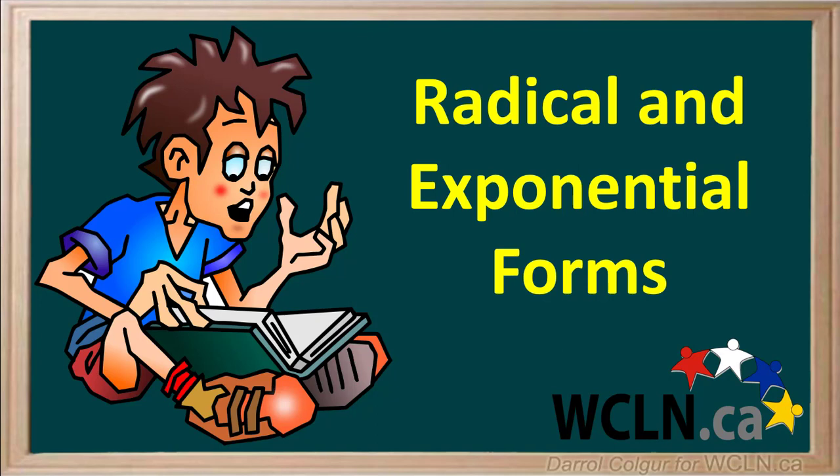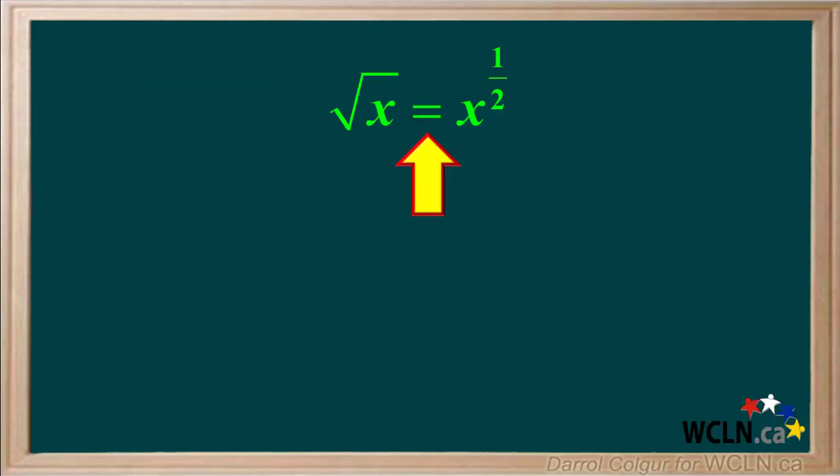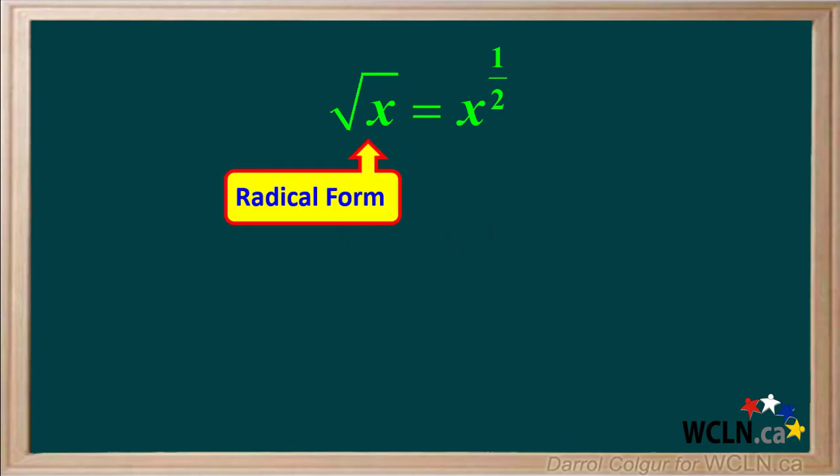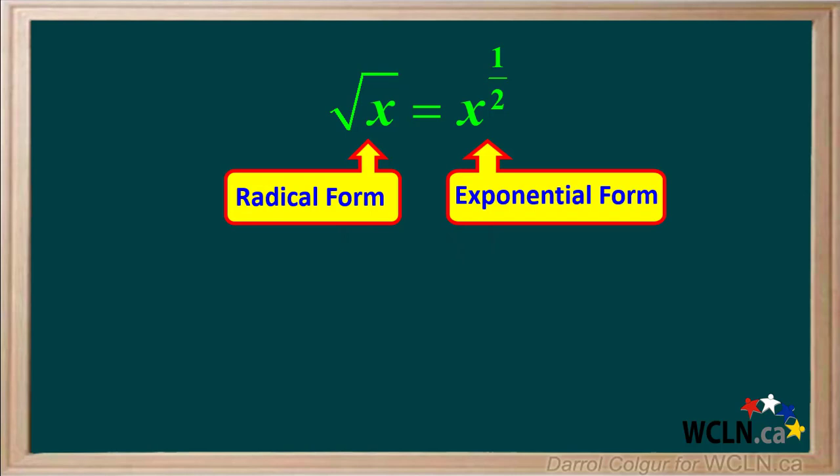We can easily convert expressions from radical to exponential form, and from exponential form to radical form. You probably recall that the square root of x can also be written as x to the power of one half. The square root of x is in radical form, and x to the power of one half is in exponential form. The two forms have exactly the same value.